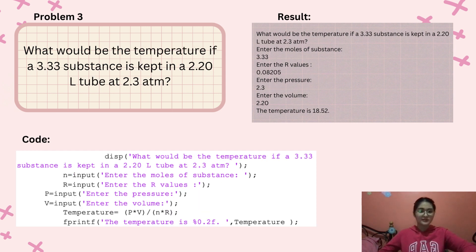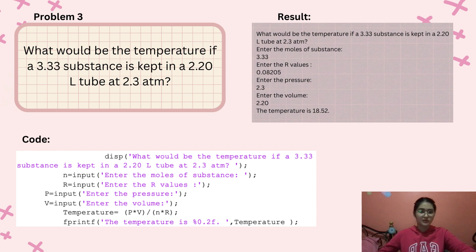The third problem is: what would be the temperature if a 3.33 mol substance is kept in a 2.20 liter tube at 2.3 atm? You enter the moles, which is 3.33; the R value, which is 0.08205; the pressure, which is 2.3 atm; and the volume, which is 2.20. The temperature is 18.52.